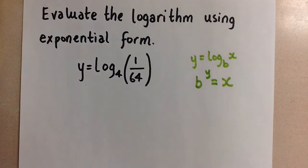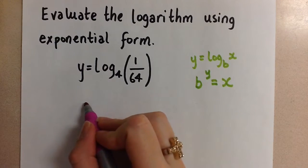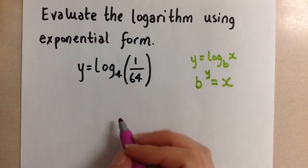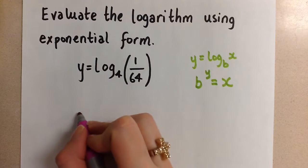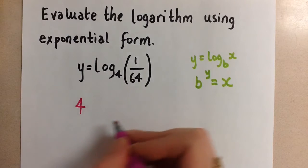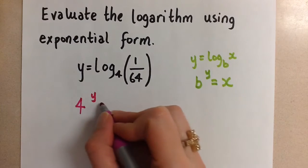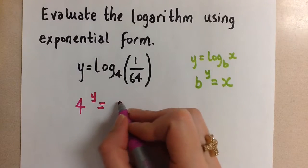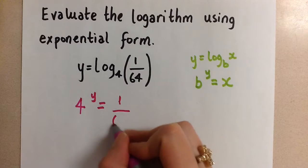So we're going to change it to this form first, and then we'll be able to evaluate it. So here, this logarithm now is going to become the base 4 to the power of what equals 1 over 64.